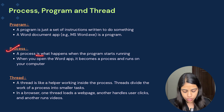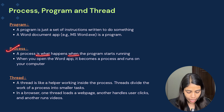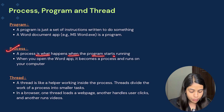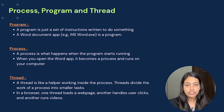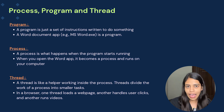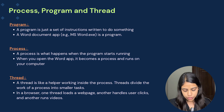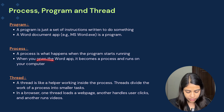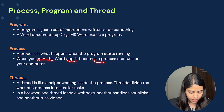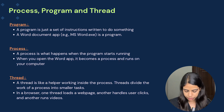Now coming to process. A process is what happens when the program starts running. So whenever you click on that msword app, that is called a process. Whenever you open the Word app, it becomes a process and runs on your computer.